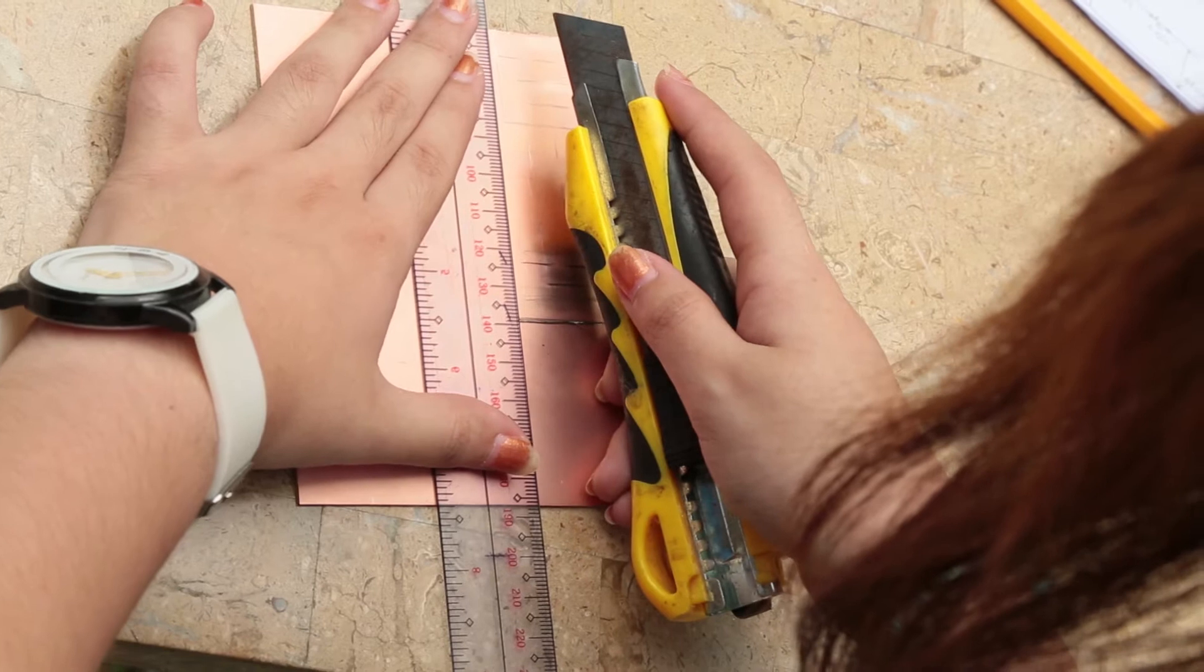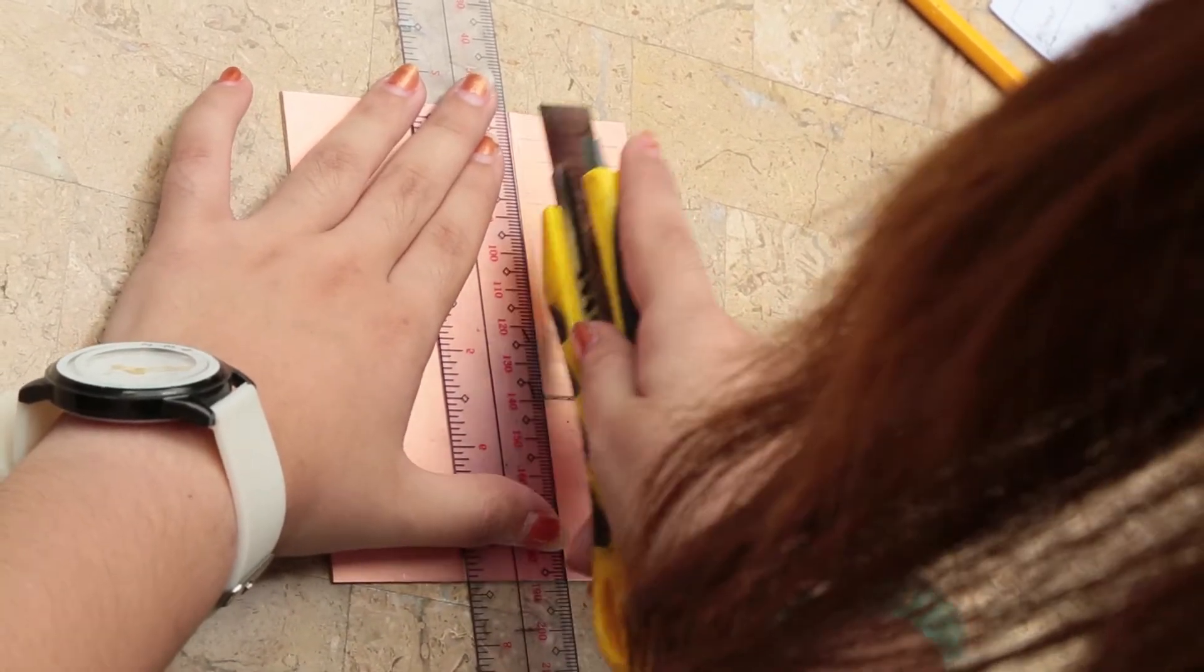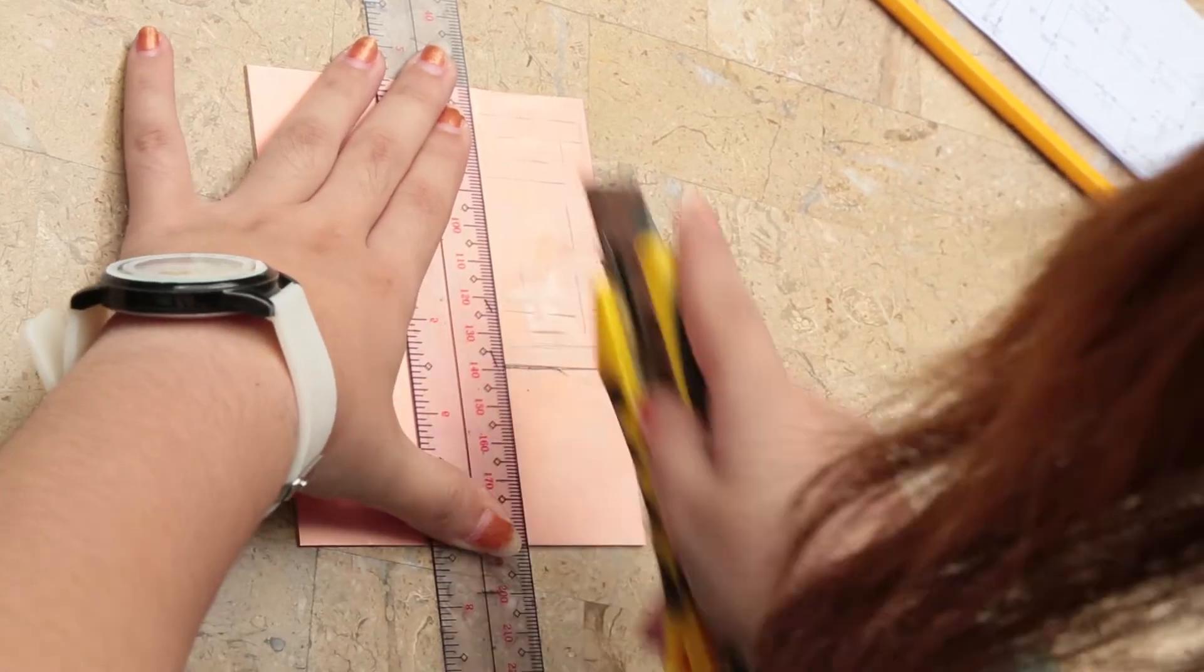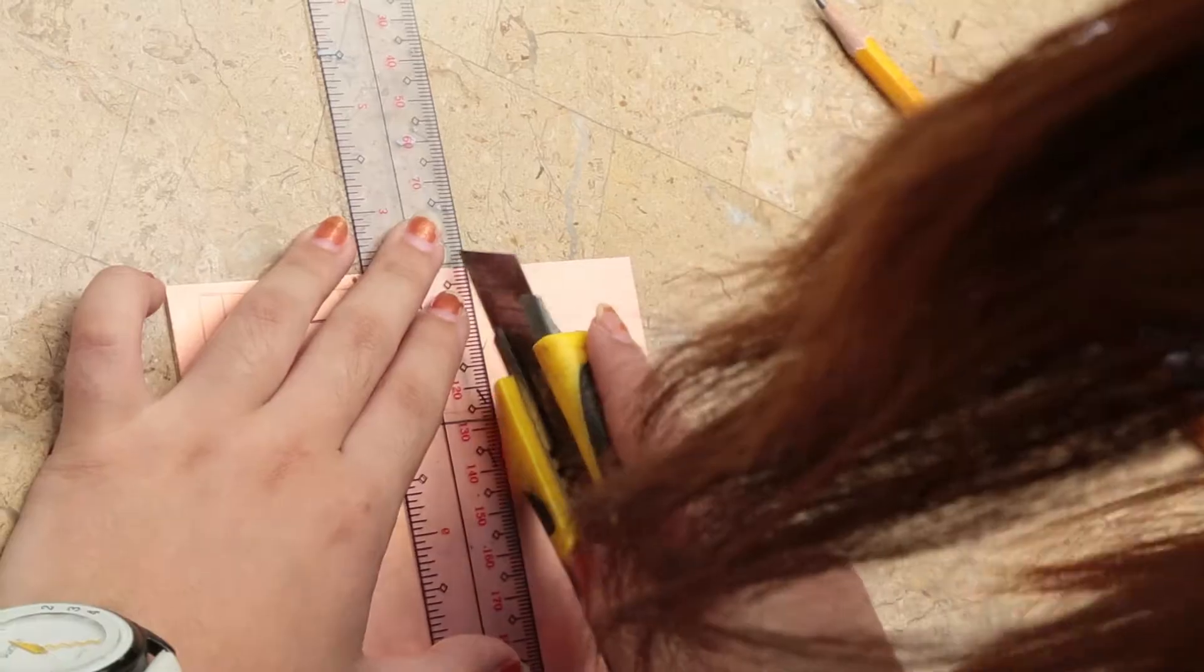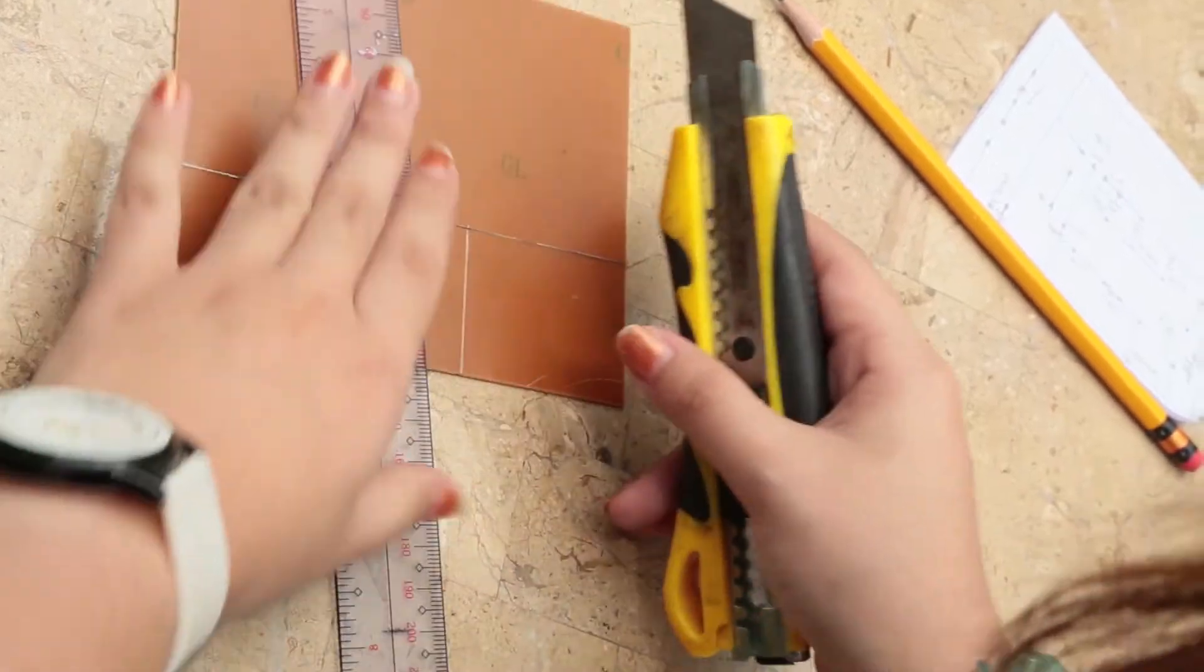She's going to run the cutter along the line. You don't have to apply too much pressure, just do accurate repetitions to ensure the edges are properly cut. It takes about 20 cuts per side to ensure a perfect cut.